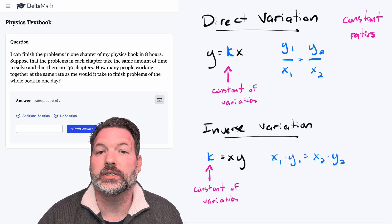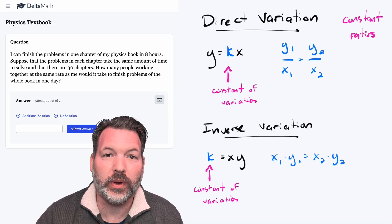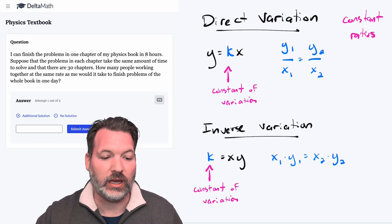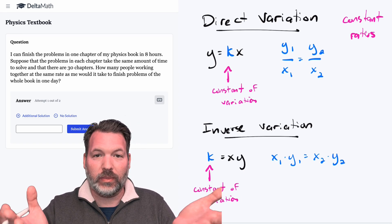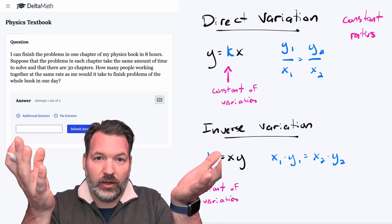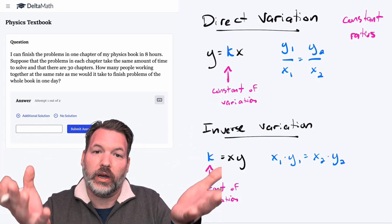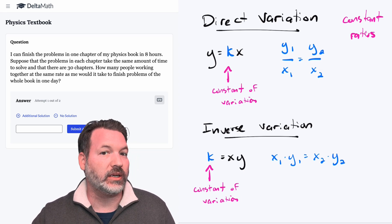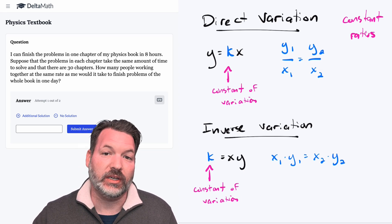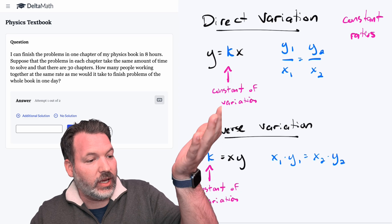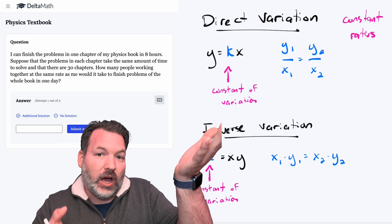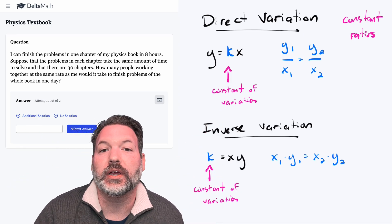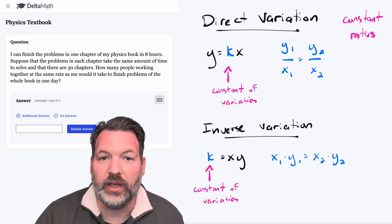Inverse variation works a little bit differently. With direct variation, because we have that proportionality, as one item gets larger so does the other, or as one item gets smaller so does the other. Contexts where we would expect the opposite to happen — that as one item gets larger the other gets smaller, or vice versa — that's what we call inverse variation.